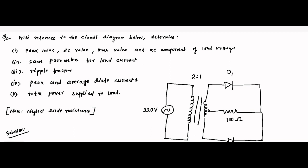Hello friends, here is another question on full wave rectifier circuits. With reference to the circuit diagram given here, we have to determine the peak value, the DC value, the RMS value, and the AC component of the load voltage across this 100 ohm load resistance. We also need the same parameters for load current, the ripple factor, the peak and average diode currents, and the total power supplied to the load.